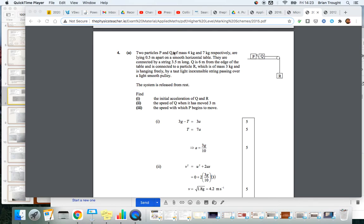So we have two particles, P and Q, of those specific masses, lying 0.5 metres apart on a horizontal table. They're connected by a string that's 3.5 metres long though, so that means the string is slack. Q is 6 metres from the edge of the table, connected to R which is 3 kg hanging freely by a taut light inextensible string.